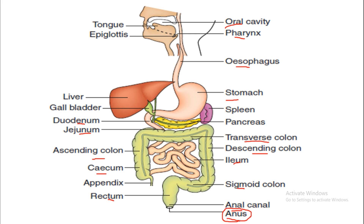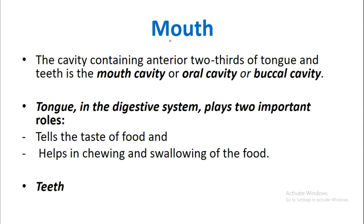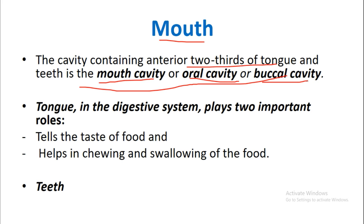The mouth, also known as the oral cavity or buccal cavity, is the cavity containing the anterior two-thirds of the tongue and the teeth. The tongue plays two important roles in the digestive system: it detects the taste of food and helps in the chewing and swallowing of food. Next is the teeth.